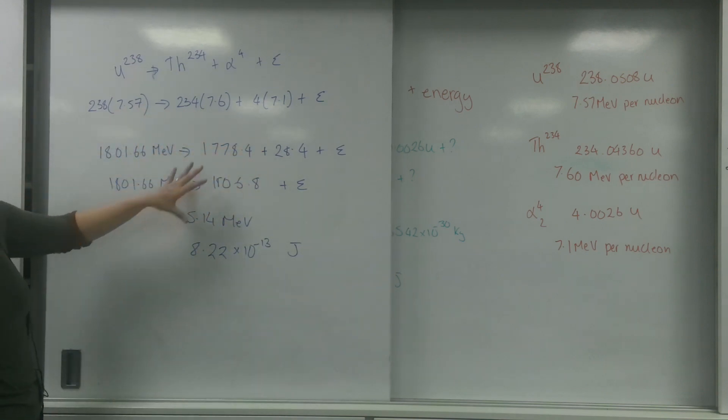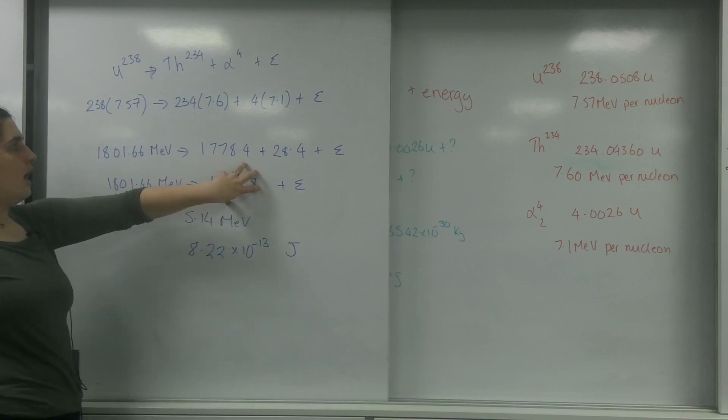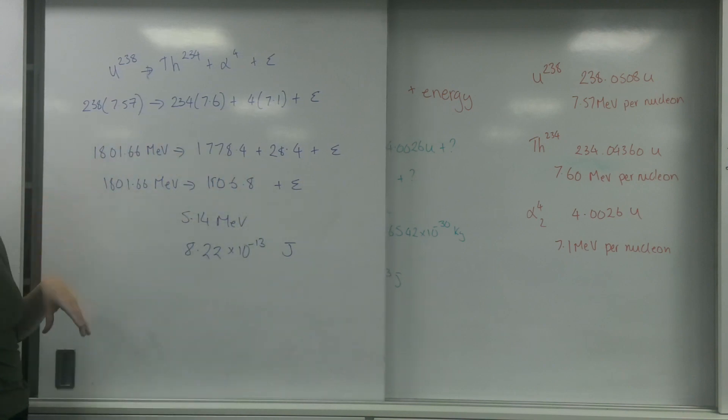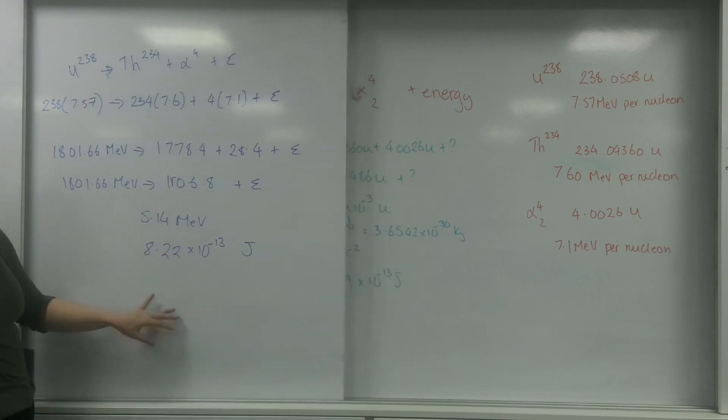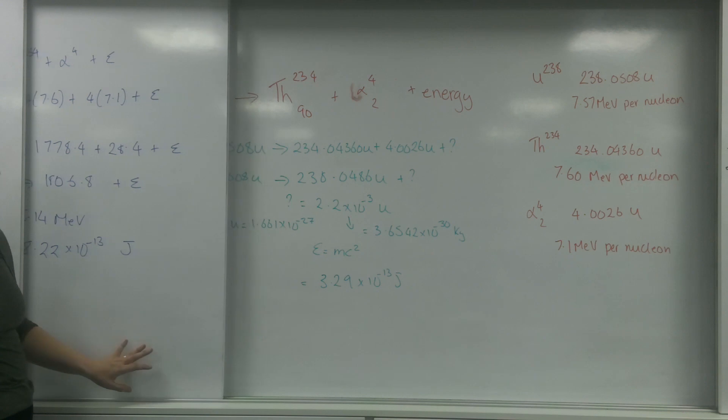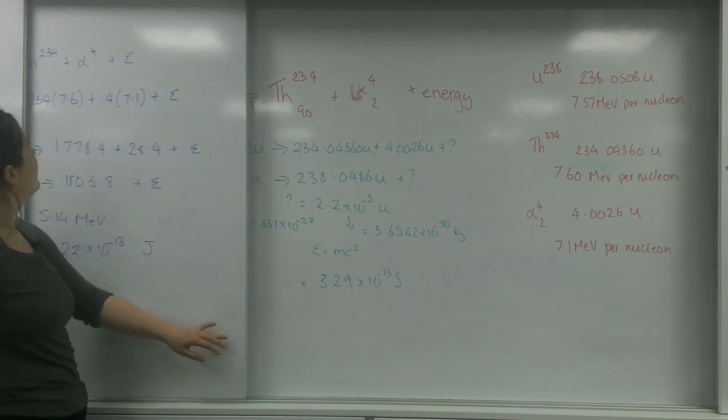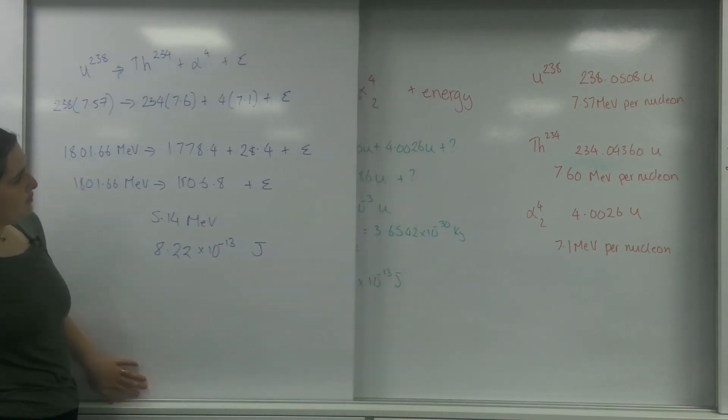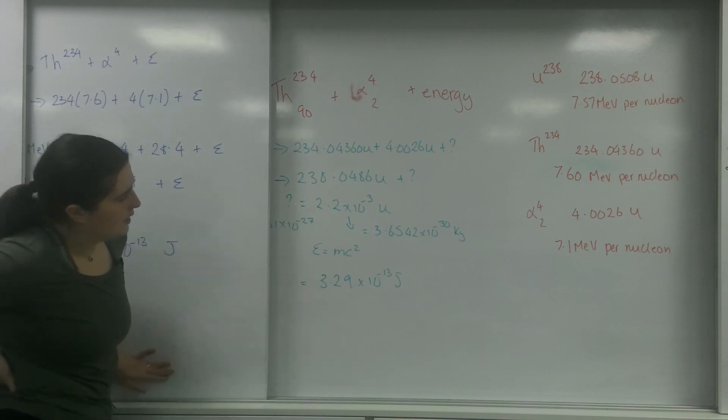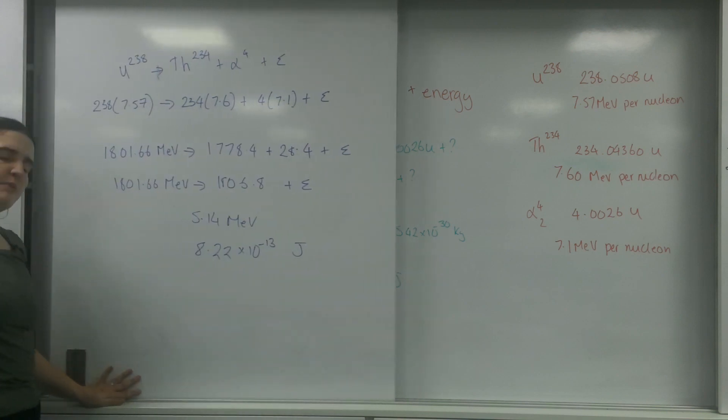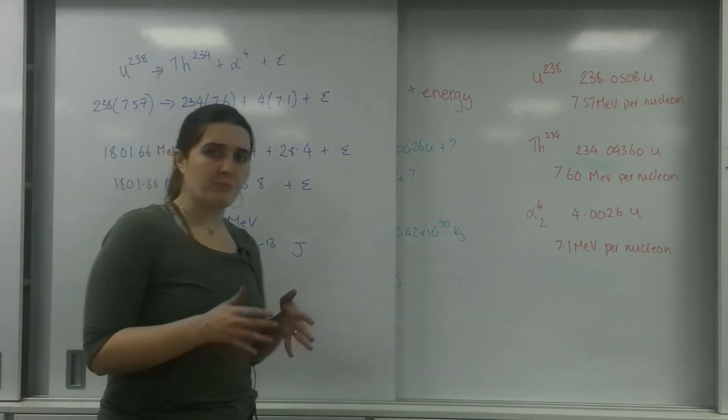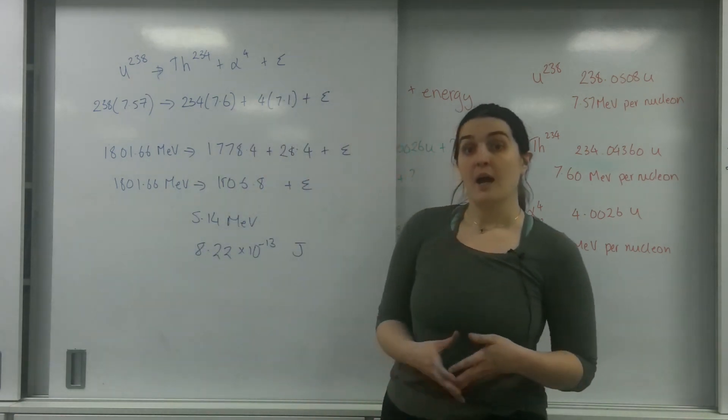The maths is right. My products are much bigger than my reactants - my products have a bigger binding energy. But the number I'm getting here is in the right region, it's like 10 to the minus 13, but the number is too big. This might be to do with discrepancies with my numbers that I were given.